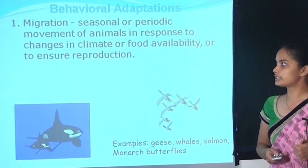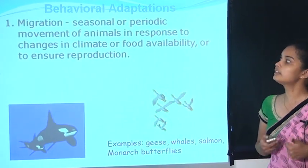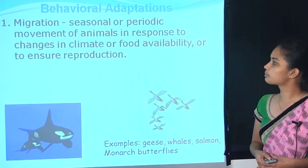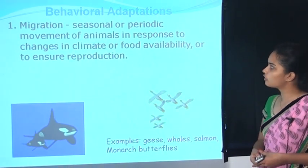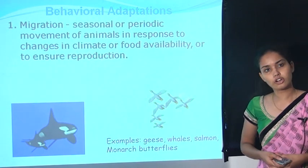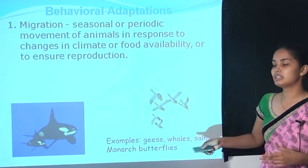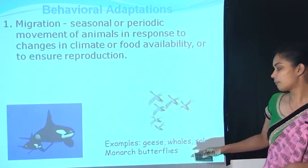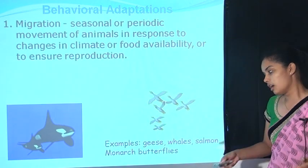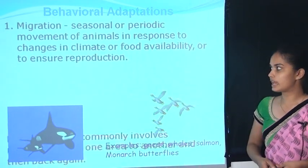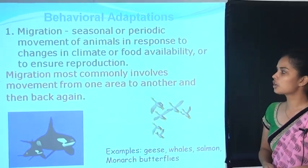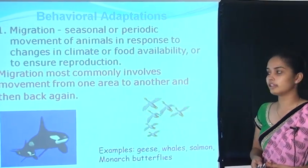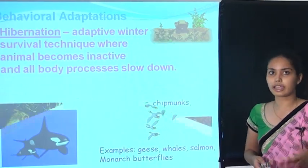The first behavioural adaptation is migration. Migration is the seasonal or periodic movement of animals in response to changes in climate or food availability, or to ensure reproduction — they migrate from one area to another. Examples include geese, whales, salmon, and monarch butterflies. Migration most commonly involves movement from one area to another and back again.